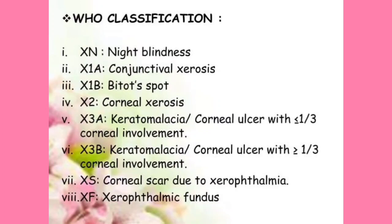X2 is corneal xerosis. We completed conjunctival xerosis in X1A, and X1B is Bitot's spot. So X2 is corneal xerosis — when the cornea, the transparent part of the eye, becomes dry, that is X2. Remember: corneal drying or corneal xerosis is X2. X3 has two parts, X3A and X3B, just like X1.